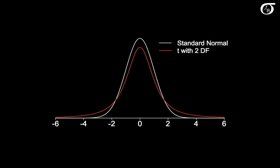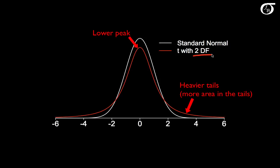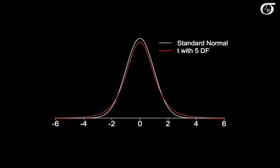I look at an introduction to the t distribution in greater detail in other videos, but let's have a quick look here. The white curve represents the standard normal distribution, and the red curve represents the t distribution with 2 degrees of freedom. Like the standard normal, the t distribution is symmetric about 0 and bell-shaped, but it has heavier tails — greater area in the tails — and a lower peak. The precise shape depends on the degrees of freedom, which are related to sample size. As degrees of freedom increase, we see the t distribution tend towards the standard normal — with 5, 10, 15, and 20 degrees of freedom, it looks quite close, but still has slightly heavier tails and a slightly lower peak.